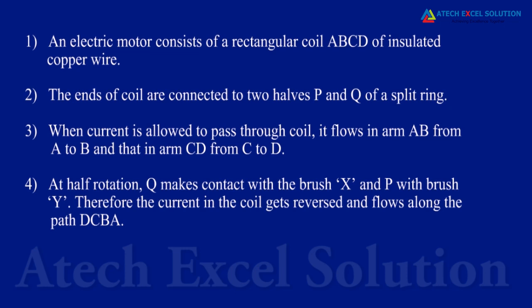Thus, the coil and the axle rotate in anti-clockwise direction. At half rotation, Q makes contact with the brush X and P with brush Y. Therefore, the current in the coil gets reversed and flows along the path DCBA. A device that reverses the direction of flow of current through a circuit is called a commutator.